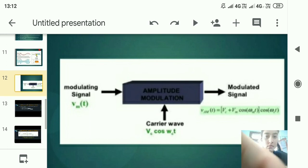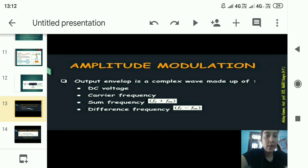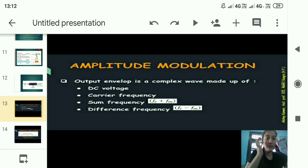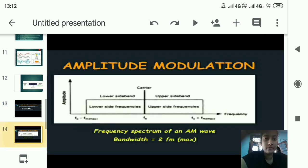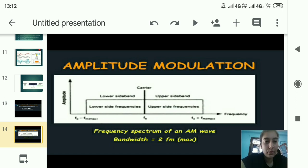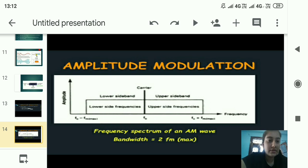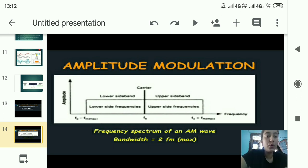The AM output envelope is a complex wave made up of: a DC voltage, the carrier frequency, the sum frequency fc + fm, and the difference frequency fc − fm. In the diagram, the carrier fc has a lower sideband and an upper sideband. The lower side frequencies are denoted as fc − fmax and the upper side frequencies as fc + fmax. The bandwidth of amplitude modulation equals 2·fmax.